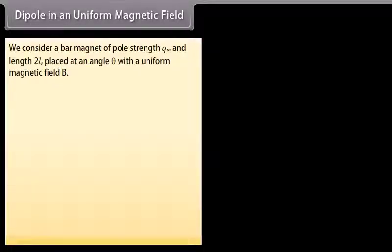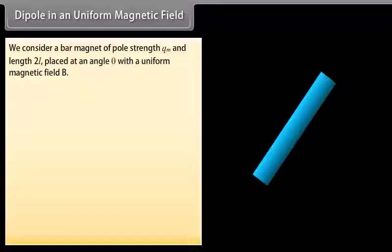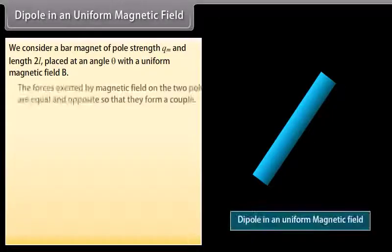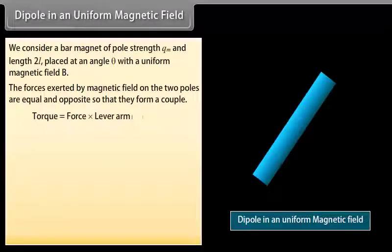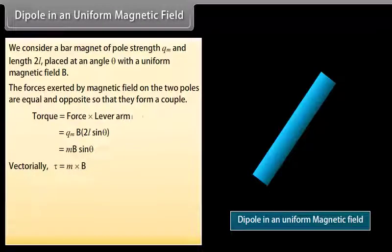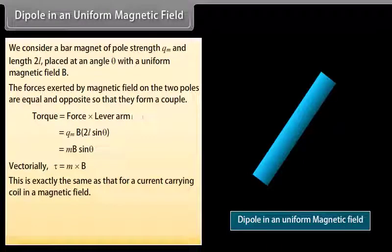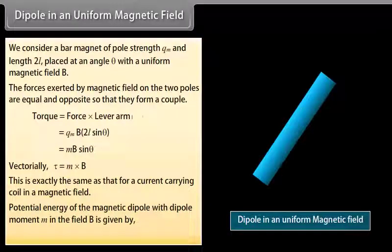For a dipole in a uniform magnetic field, we consider a bar magnet of pole strength Qm and length 2L placed at angle theta with a uniform magnetic field B. The forces exerted by the magnetic field on the two poles are equal and opposite, forming a couple. Torque equals force into lever arm, giving torque equal to MB sin theta. Vectorially, it is represented as tau equal to the cross product of M and B. The potential energy of the magnetic dipole with dipole moment M in field B is given by the negative dot product of M and B.